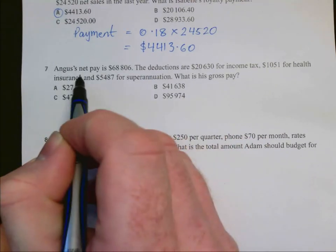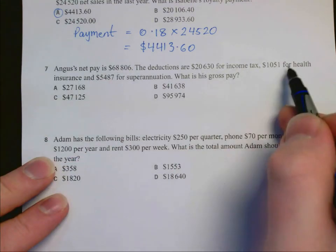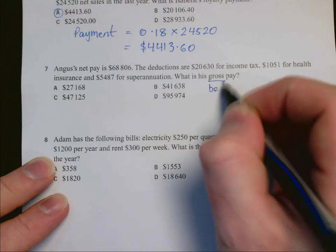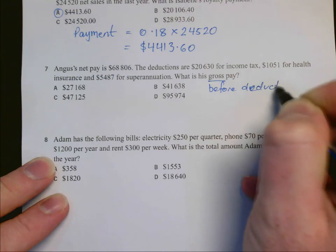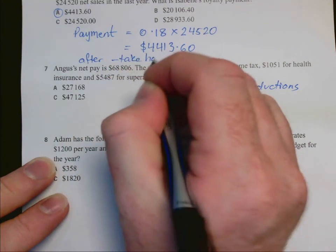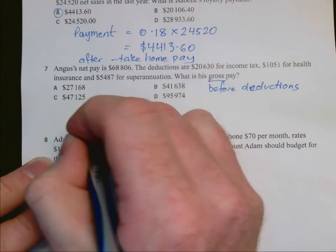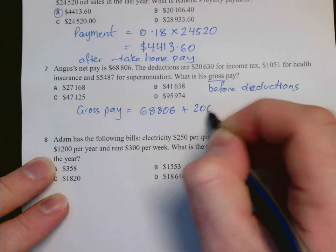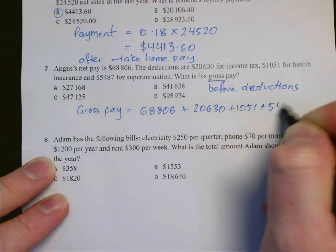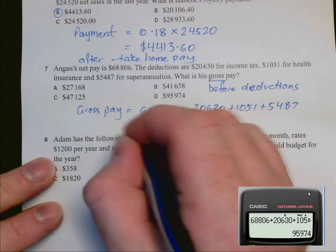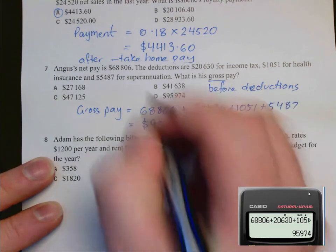In question 7, Angus's net pay is $68,806. There are 1 to 3 deductions listed. We're asked to find what is his gross pay. Gross is before deductions. Net is after deductions. This is our take home pay. So that means that the deductions have already been taken out. So to find the gross pay we need to take the $68,806 and add the deductions back in. And again a calculator will give us the answer of $95,974 which is D.